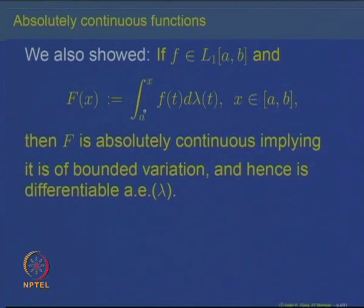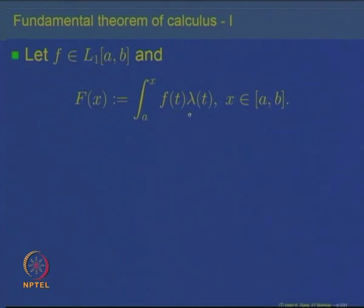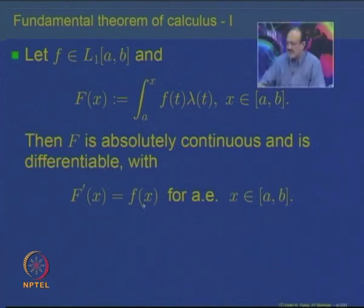Once a function is absolutely continuous, it also becomes a function of bounded variation and hence becomes differentiable almost everywhere. The main aim of fundamental theorem of calculus Part 1 is to identify the derivative of this function. If f is L¹(a,b) and F(x) is the indefinite integral of f(t) dλ(t), then we want to show that the derivative of F, which is differentiable almost everywhere, is equal to little f(x) for almost all x in [a,b].